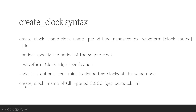Let us consider one example: create_clock -name BFT_clock -period 5 [get_ports clock_in]. BFT_clock is the name given to the clock group, period is 5 nanoseconds, and clock_in is the actual clock input port. The -waveform and -add options are not added here. If -waveform is not specified, the duty cycle defaults to 50%. A different name from the actual port name is allowed because we can create multiple clocks for the same port — for example, another clock for the same port analyzing a period of 10 nanoseconds with a different clock name.